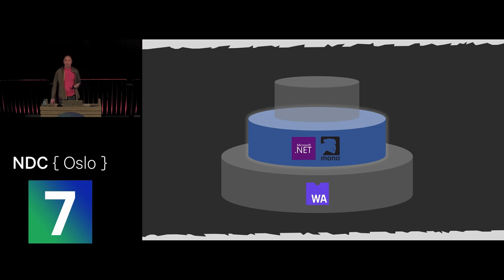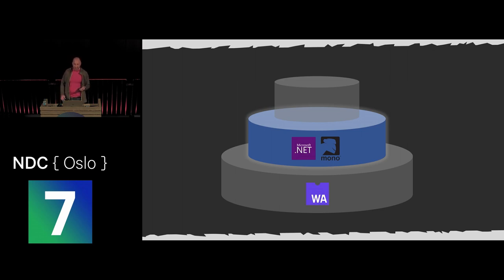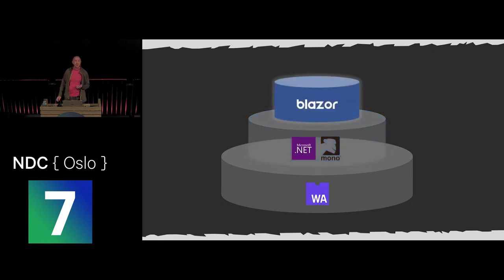In the long run this doesn't matter much since everything is converging with the .NET 5 announcements. You may see the word Mono show up for a while, but it won't really matter. The final layer in our technology stack is Blazor itself — the UI programming model — which knows about components, parameters, re-rendering, nesting, and all that.